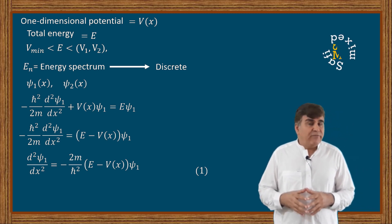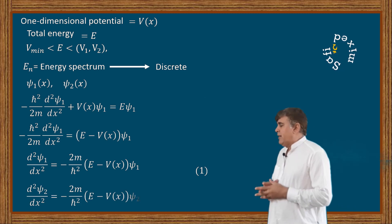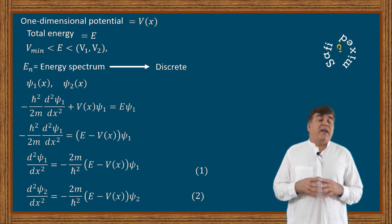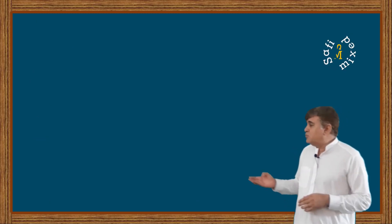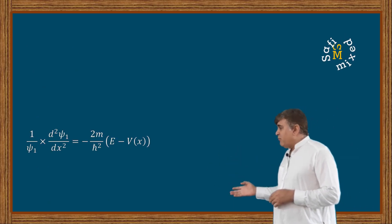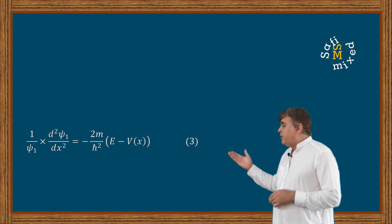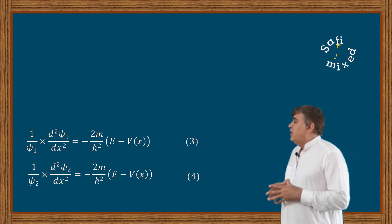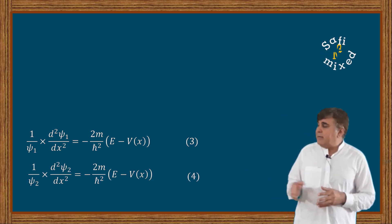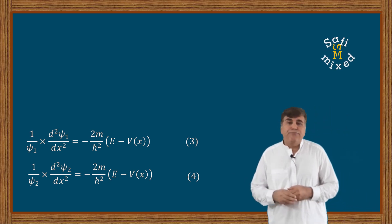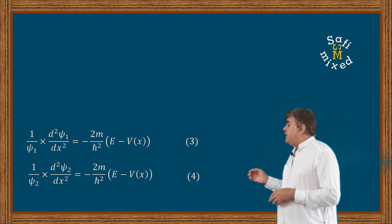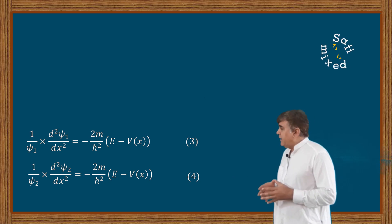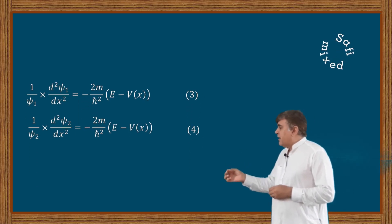Similarly, I can put the Schrödinger wave equation for the second wave function ψ₂ into this form as well. Now dividing both sides of equations 1 and 2 by ψ₁ and ψ₂ respectively, we can modify them — taking ψ₁ to the denominator on the left side for equation 1, and ψ₂ to the denominator on the left side for equation 2, giving us equations 3 and 4. Comparing equations 3 and 4, the right-hand sides are the same, so we can construct equation 5.